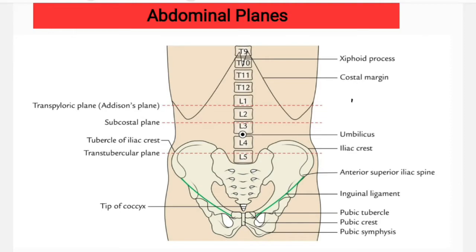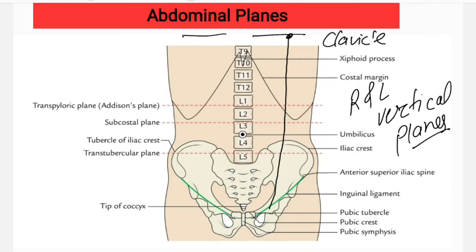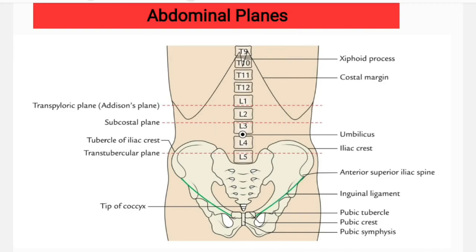Finally, we have the right and left vertical planes. Each starts from the midpoint of the clavicle and runs downward to the mid-inguinal point — the midpoint between the anterior superior iliac spine and the pubic symphysis. These are also known as the mid-clavicular planes. That covers the abdominal planes — see you in the next video.